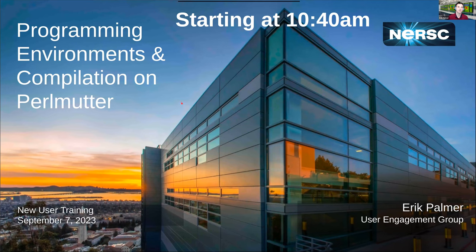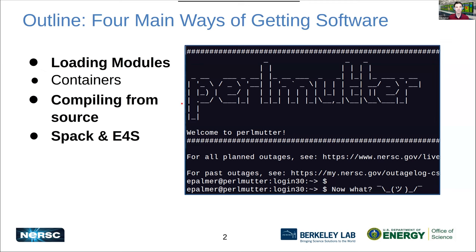Let's take you back to the beginning. You have SSH'd into Perlmutter — now what? To do cool stuff on our supercomputer, you need to have cool software. For my list, I came up with four main ways of getting software onto our system.